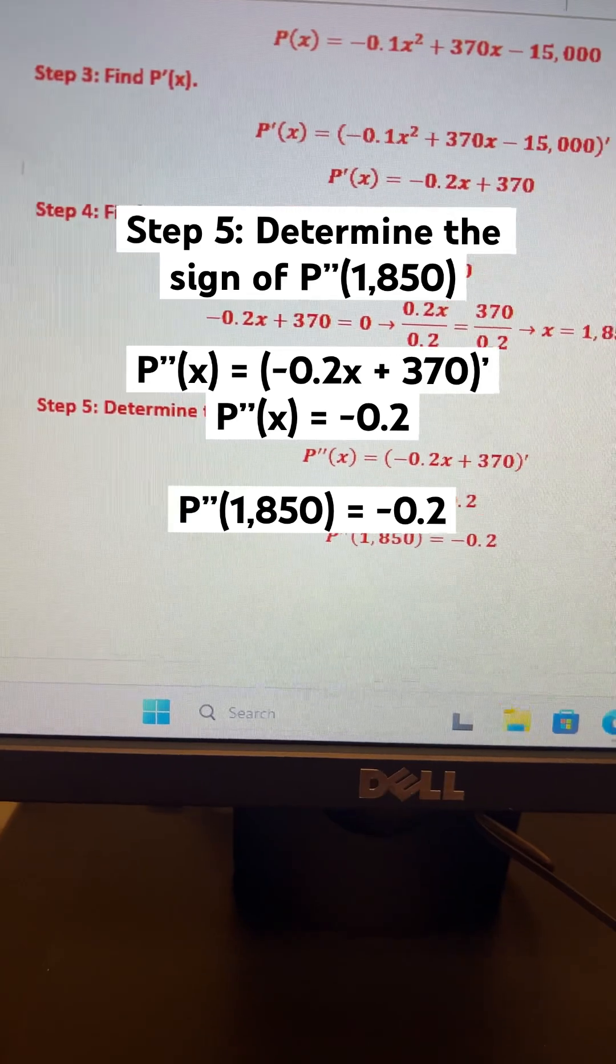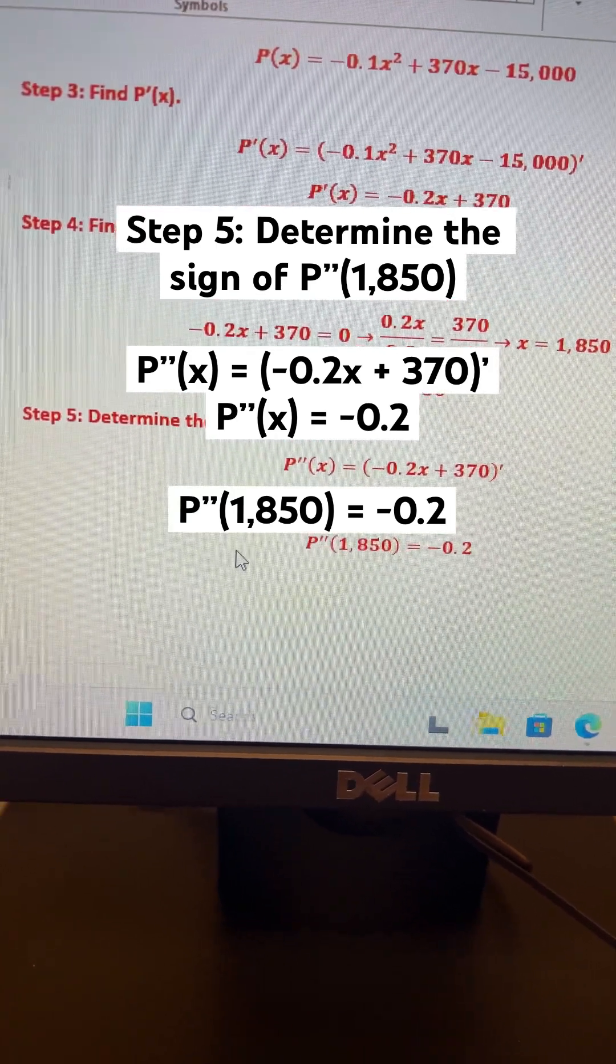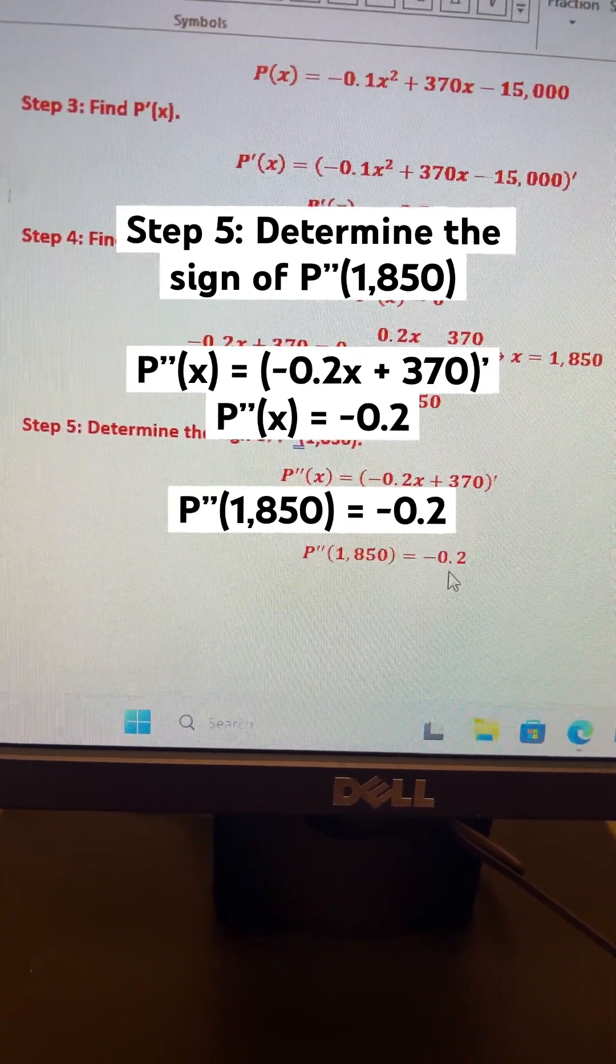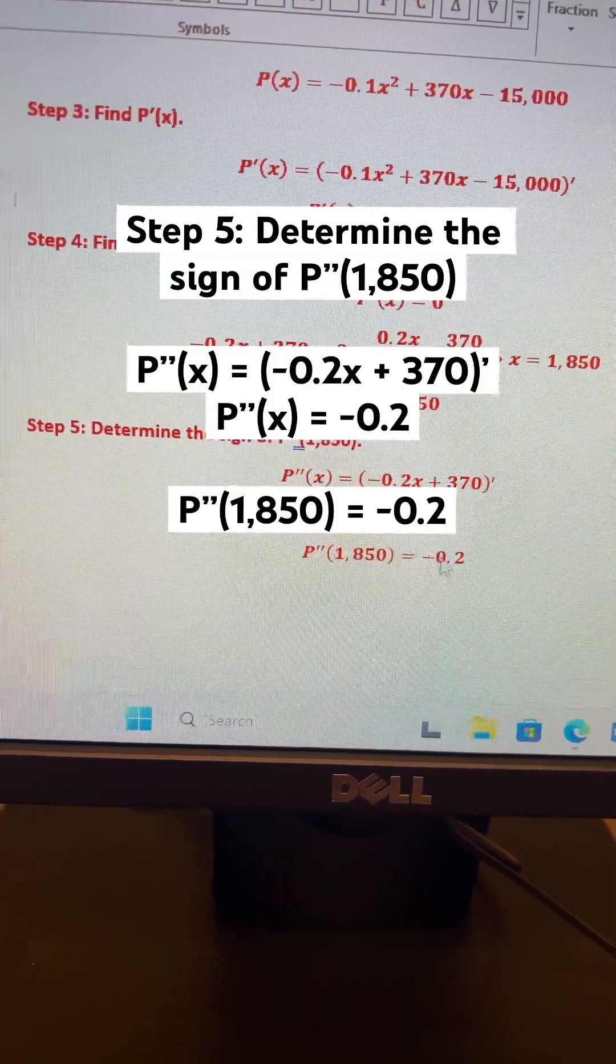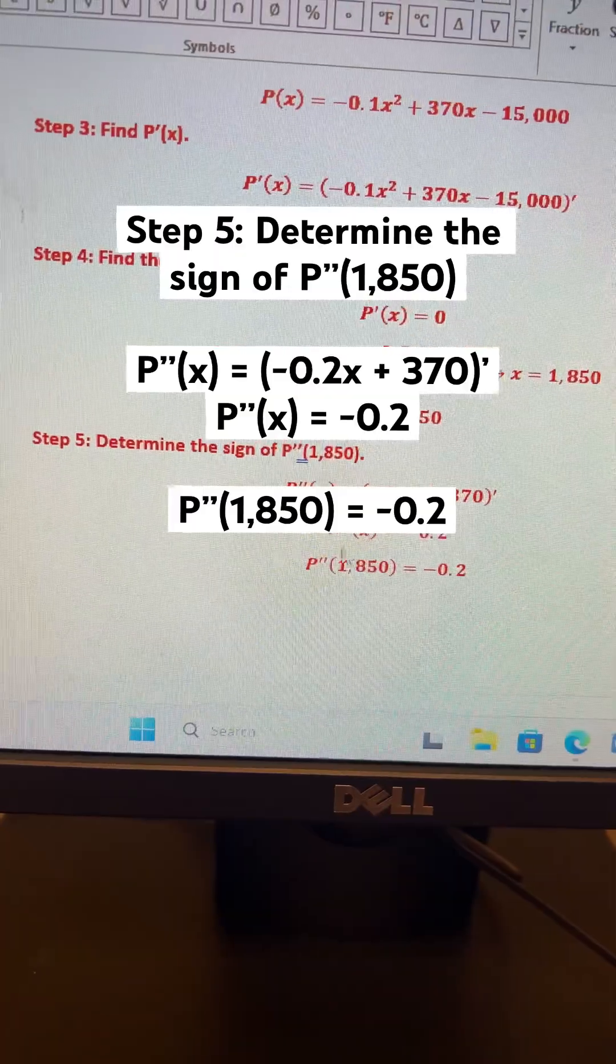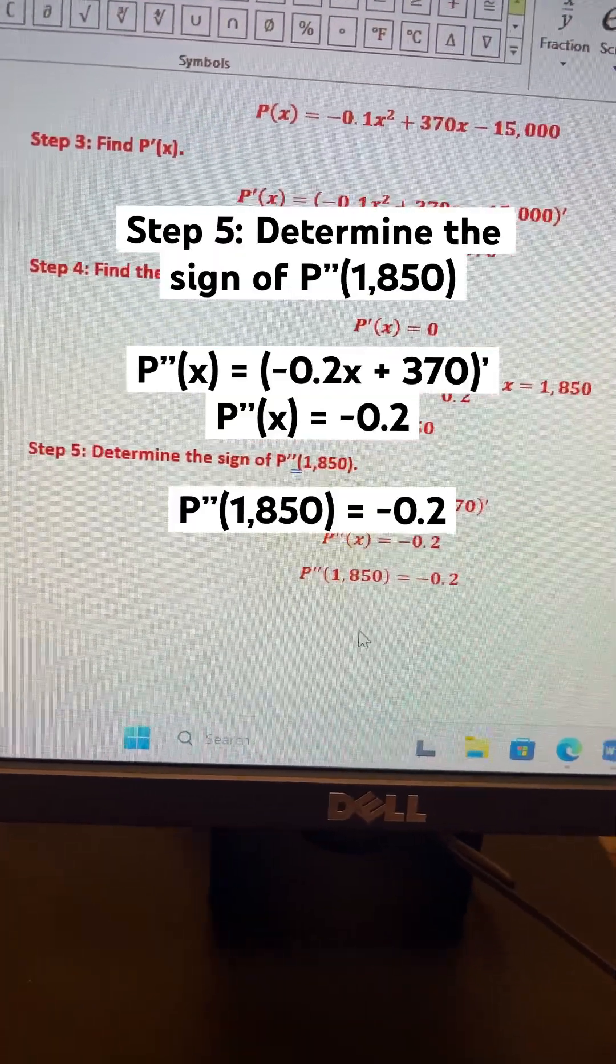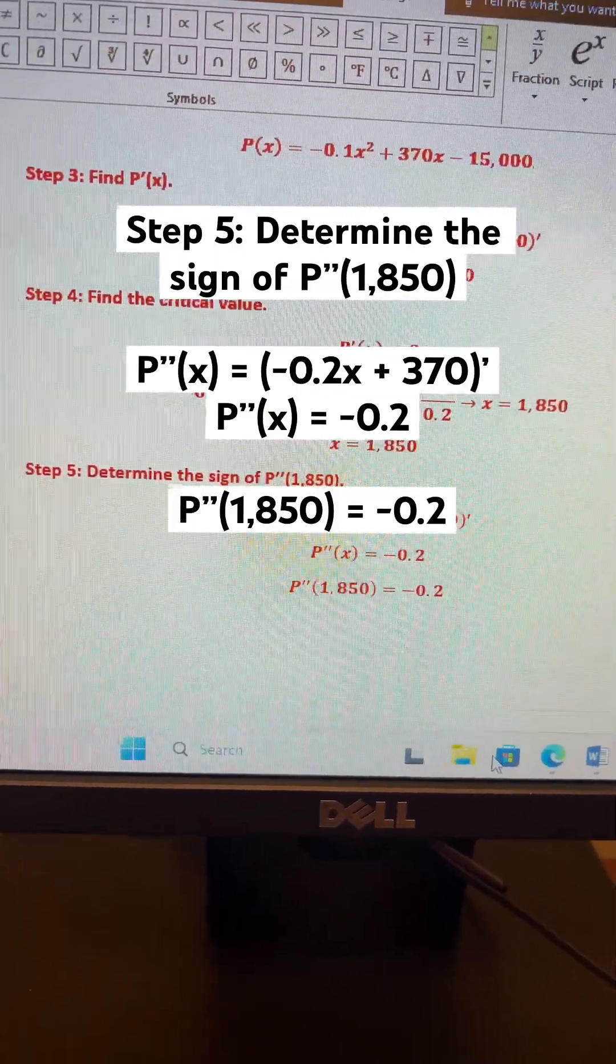And just like with part 1, the second derivative of 1850 is just negative 0.2, because there are no x values to make the value vary. So any x value would just still be negative 0.2.